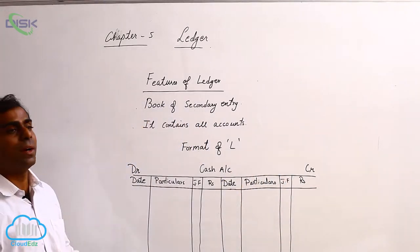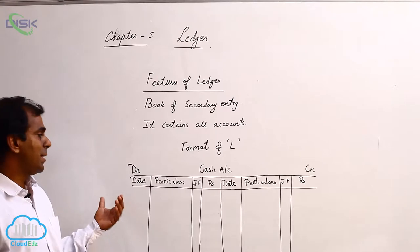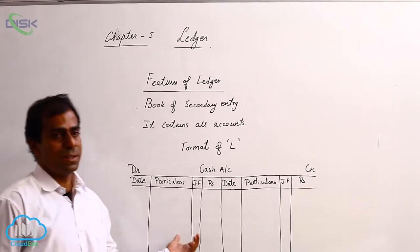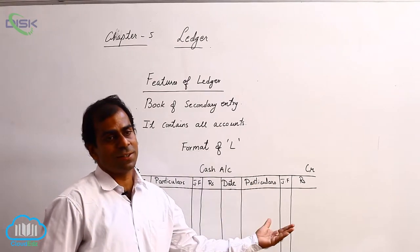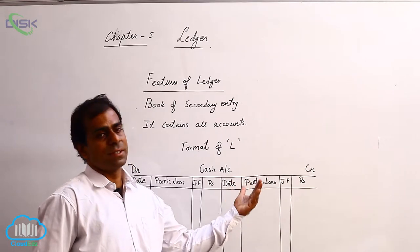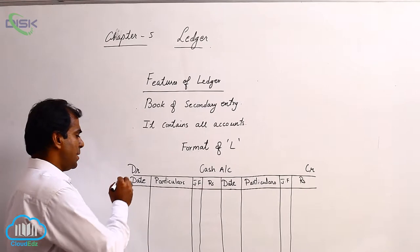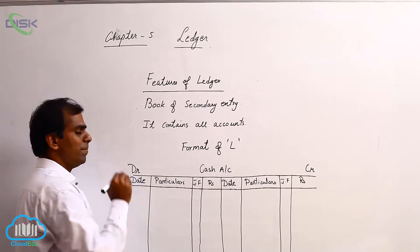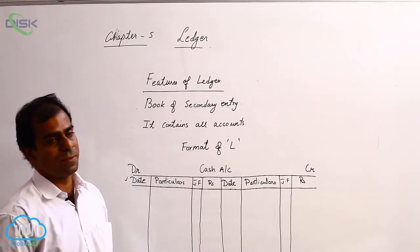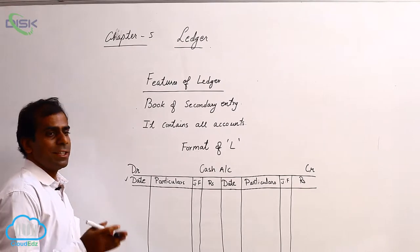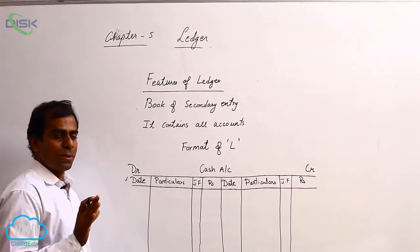Let us discuss what we will be entering into these columns based on the journal entries what we have written previously. Naturally, in the date column, we enter the date on which a particular journal entry has been written.